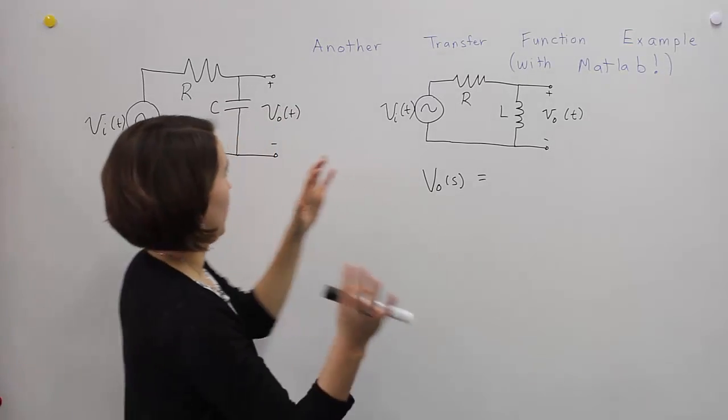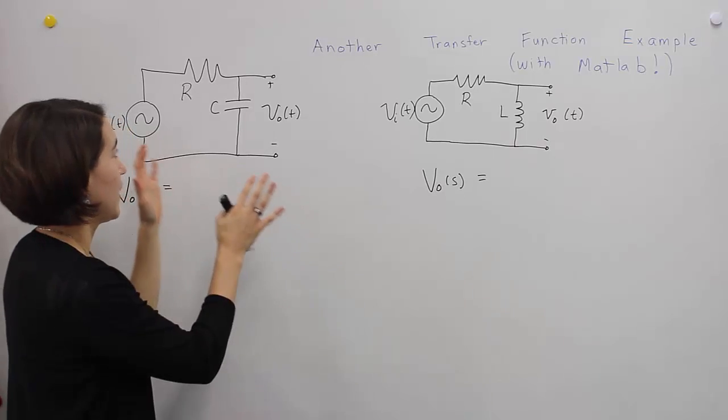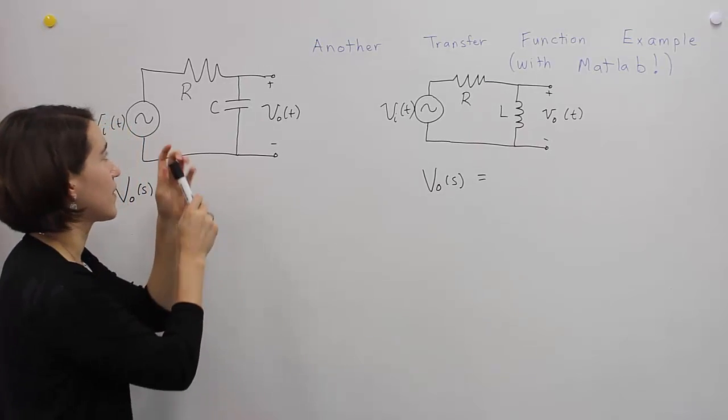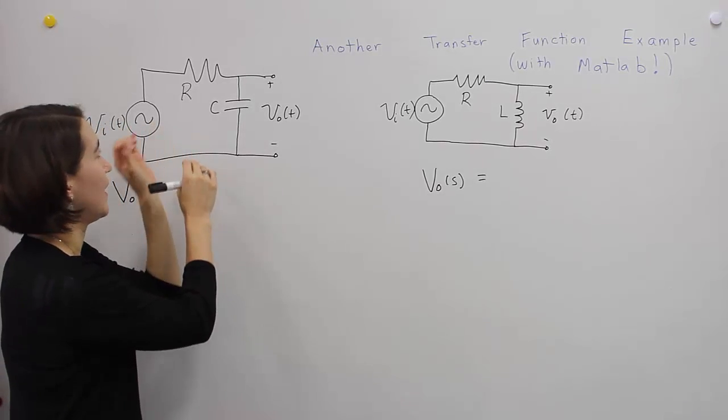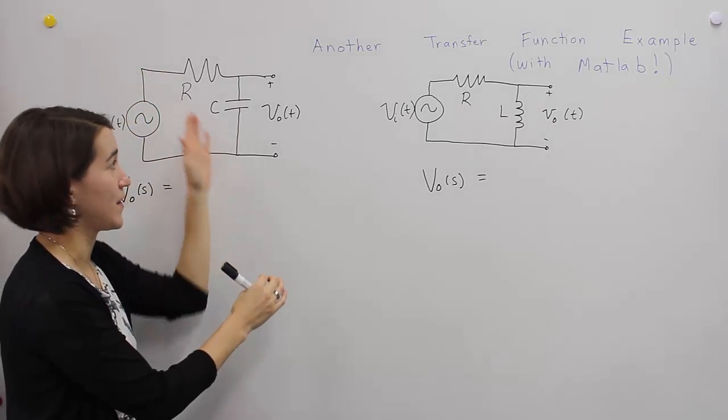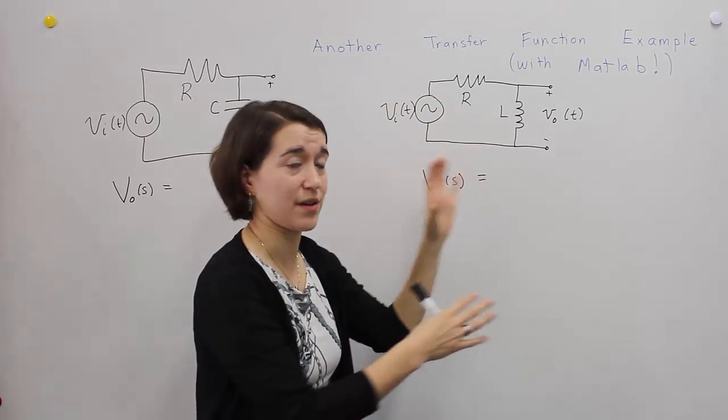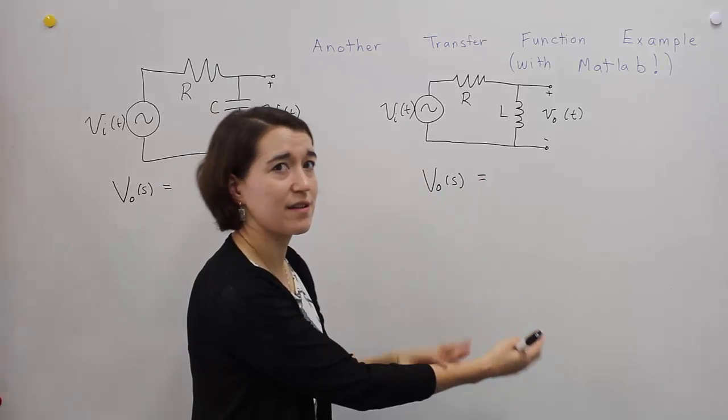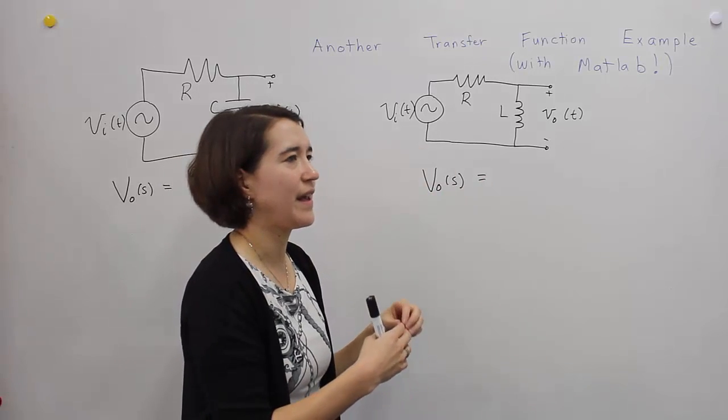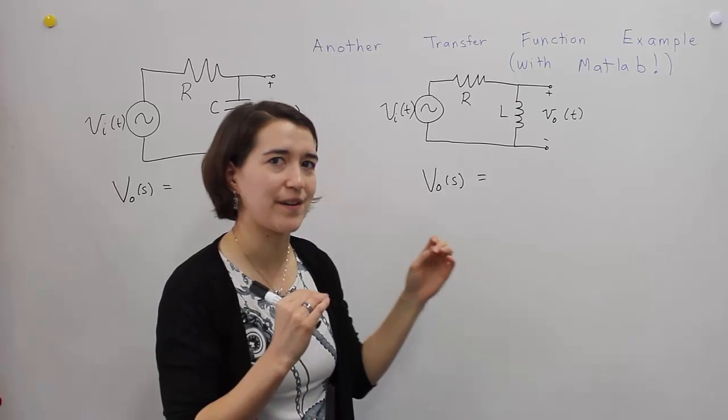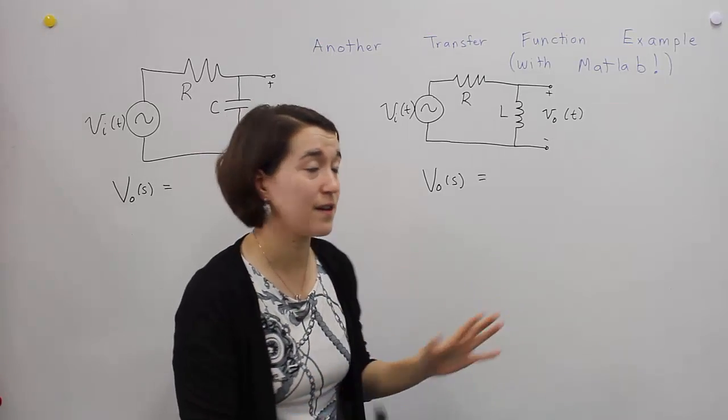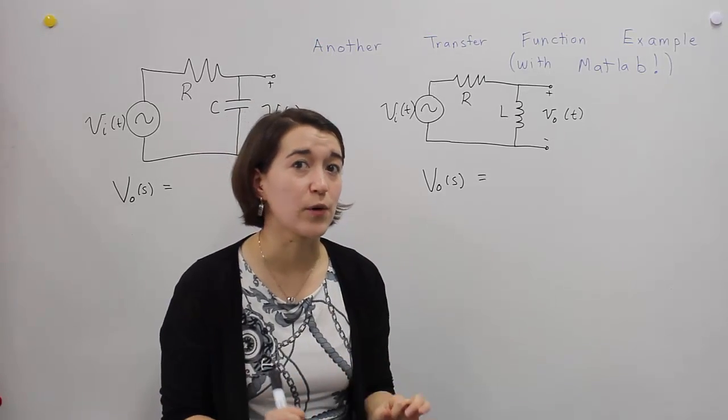So we're going to just do these two systems real quick. This is a really basic resistor and capacitor, so RC and then an RL system. These are common circuits, and we'll look at how they work in terms of filtering. We're going to look at them at different frequencies, and then we're going to move to MATLAB and do a little bit more analysis.